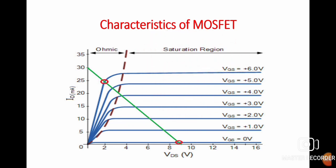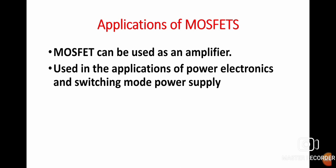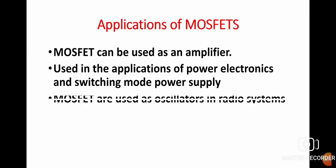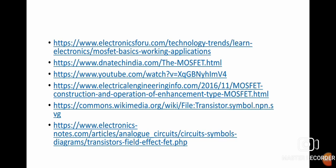Now, what are the applications of MOSFET? MOSFET can be used as an amplifier. MOSFETs are used in power electronics and SMPS — switch mode power supplies, which are used in CPUs. MOSFET can also be used as an oscillator in a radio system, and it can be used for sound systems in automobiles. So those are the references I have used to prepare this lecture. Thank you very much.